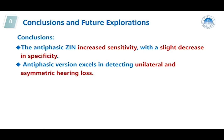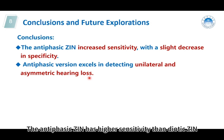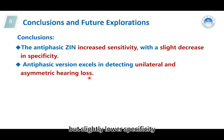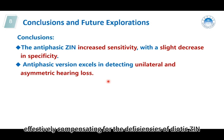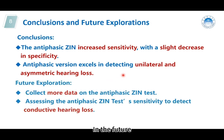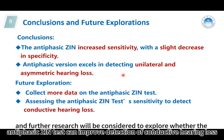In conclusion, the antithelastic scene has higher sensitivity than diverted scene but slightly lower specificity. The antithelastic scene test shows high sensitivity for unilateral and asymmetric hearing loss, effectively compensating for the deficiencies of diverted scene. In the future, more antithelastic scene data will be added, and further research will be considered to explore whether antithelastic scene test can improve detection of conductive hearing loss.